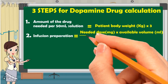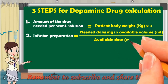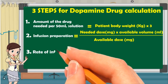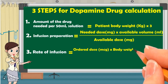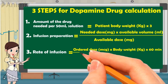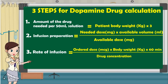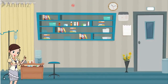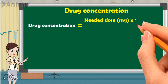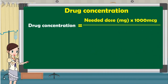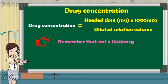Step 3: rate of infusion per hour equals the ordered dose in micrograms multiplied by body weight in kg, multiplied by 60 minutes, all divided by the drug concentration. The drug concentration is calculated as: needed dose in mg multiplied by 1000 micrograms, divided by the diluted solution volume. Remember that 1 milligram equals 1000 micrograms.